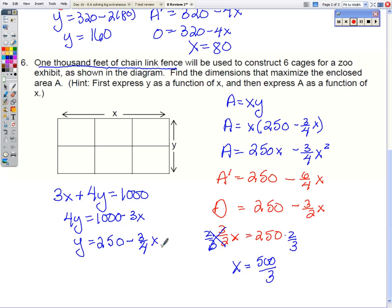So then plugging that back in here to find y. What's really nice is these 3's cancel. So 250 minus 500 over 4 gives us a y value of 125.